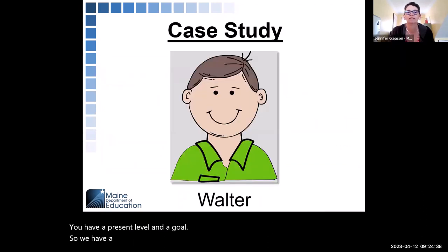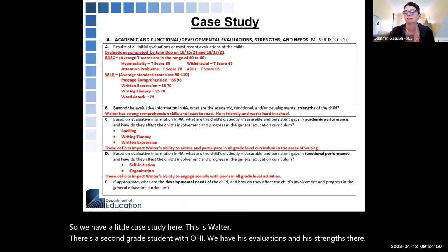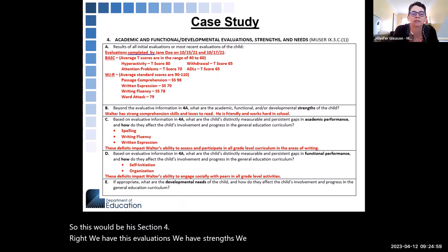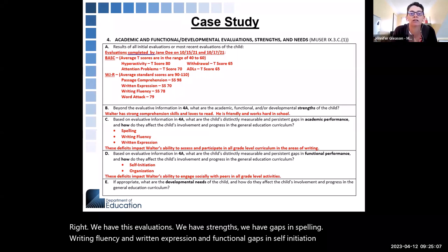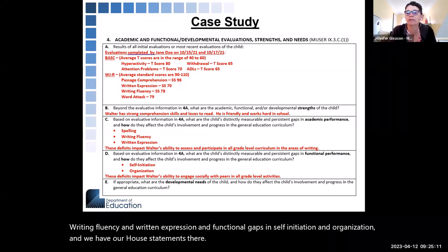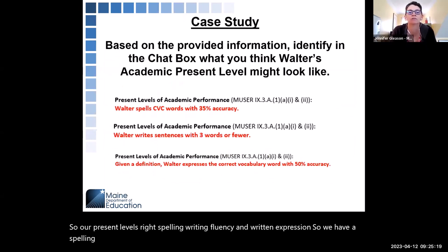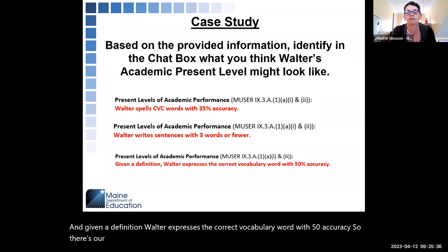Here is a case study — Walter, a second-grade student with OHI. We have his evaluations and his strengths. His Section 4 shows gaps in spelling, writing fluency, and written expression, and functional gaps in self-initiation and organization. His academic present levels are: he spells CVC words with 35% accuracy; he writes sentences with three words or fewer; and given a definition, Walter expresses the correct vocabulary word with 50% accuracy. There's our present level — one for each of those gaps.